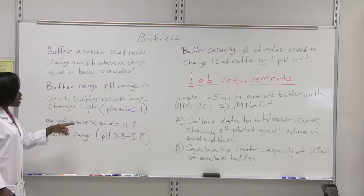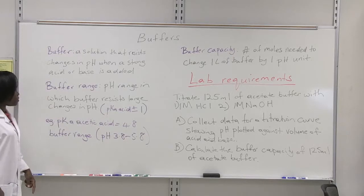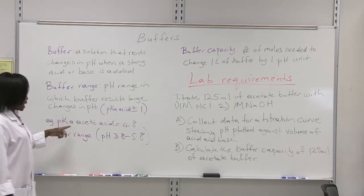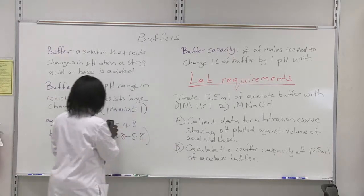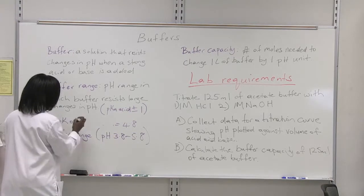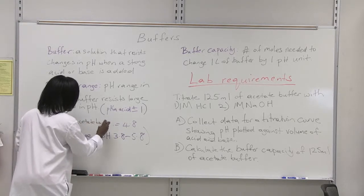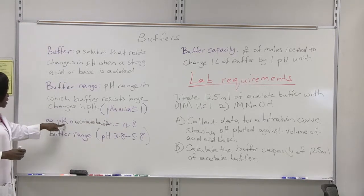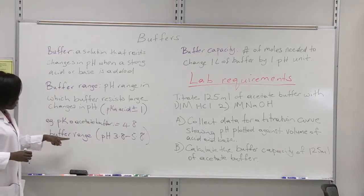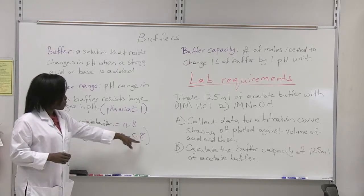You can get from your textbook the dissociation constant for certain acids. For the acetate buffer, this is the dissociation constant for the acetate buffer. That pKa value is 4.8. That means that the acetate buffer has a range of between 3.8 to 5.8.